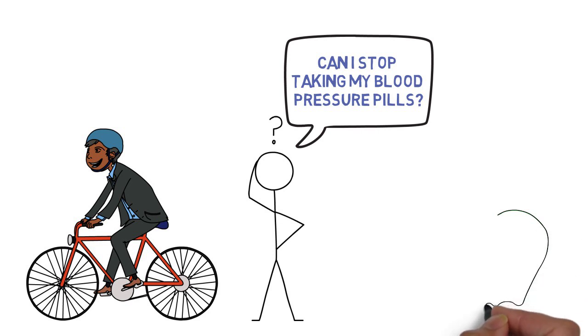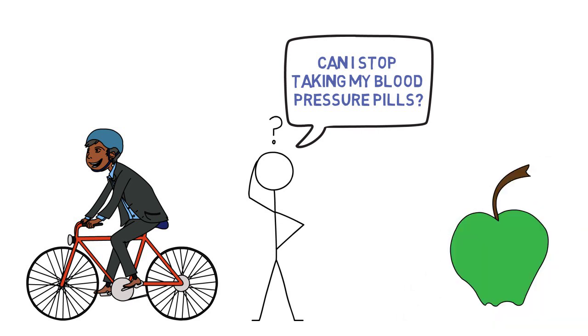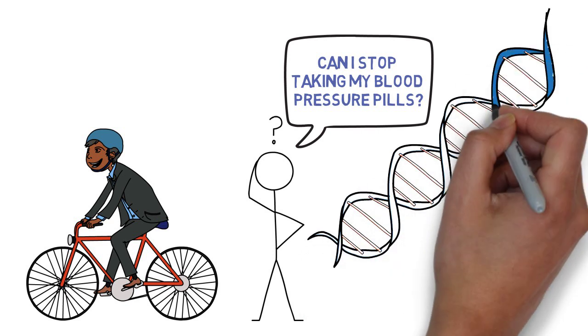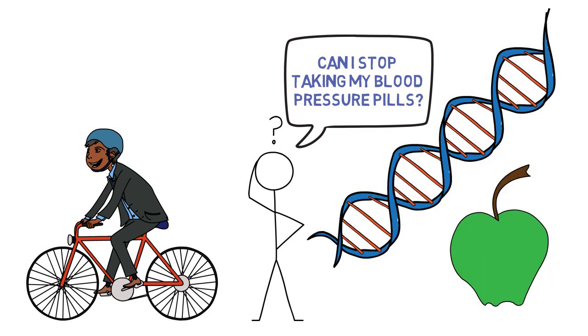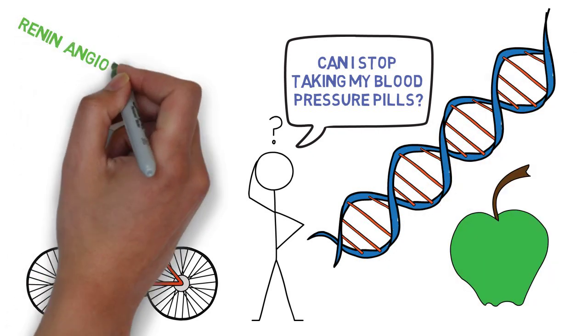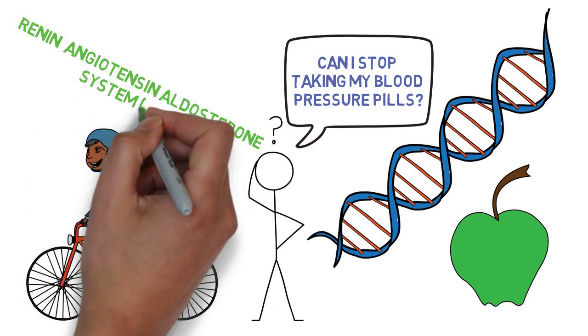Some people may take it upon themselves to substitute the pills with changes in lifestyle. And while lifestyle is extremely important in managing blood pressure, there's a lot of different factors that play a role, including genetics and inappropriate release of certain hormones from the kidneys, specifically the renin-angiotensin-aldosterone system. That's what I will be focusing this video on today.